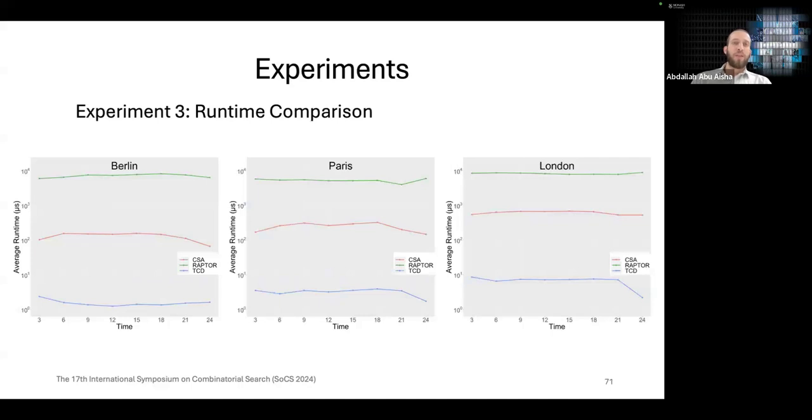The final experiment is the runtime comparison. We compare the performance of our algorithm with two of the state-of-the-art algorithms, CSA and Raptor. As we can see, our algorithm is consistently faster by two to three orders of magnitude compared to CSA and Raptor respectively across the three networks and all times of the day.